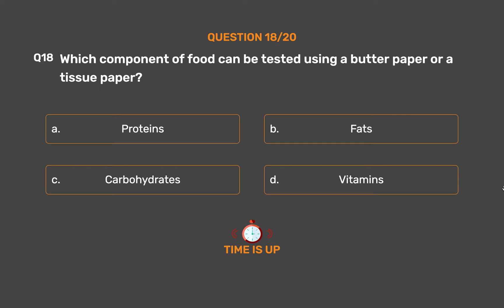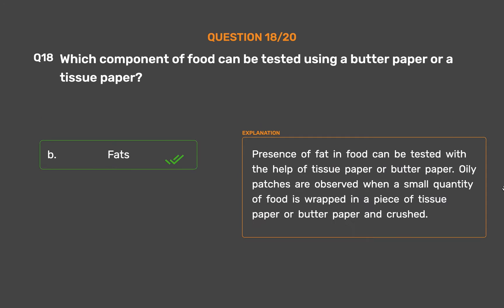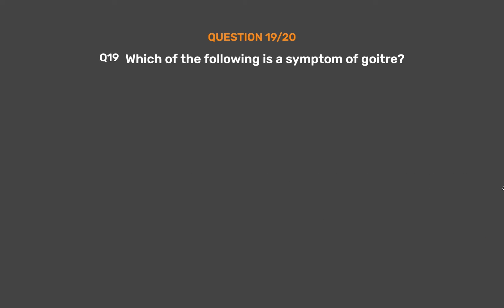The correct answer is Option B - Fats. Presence of fat in food can be tested with the help of tissue paper or butter paper. Oily patches are observed when a small quantity of food is wrapped in a piece of tissue paper or butter paper and crushed.